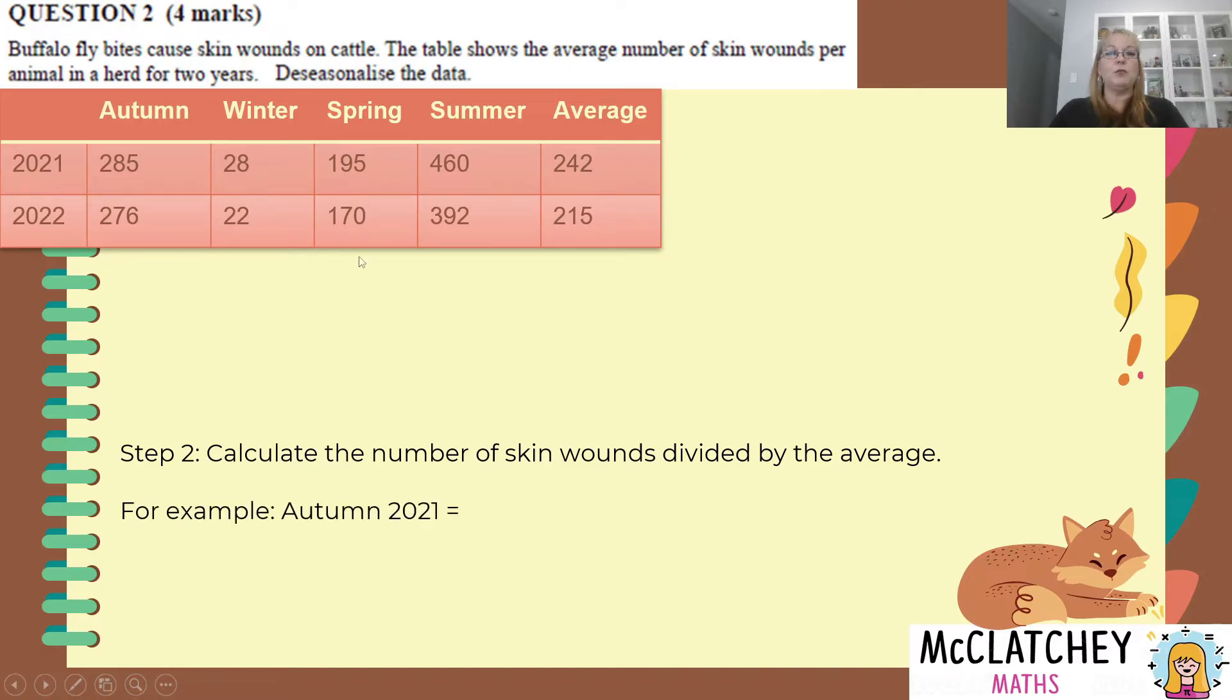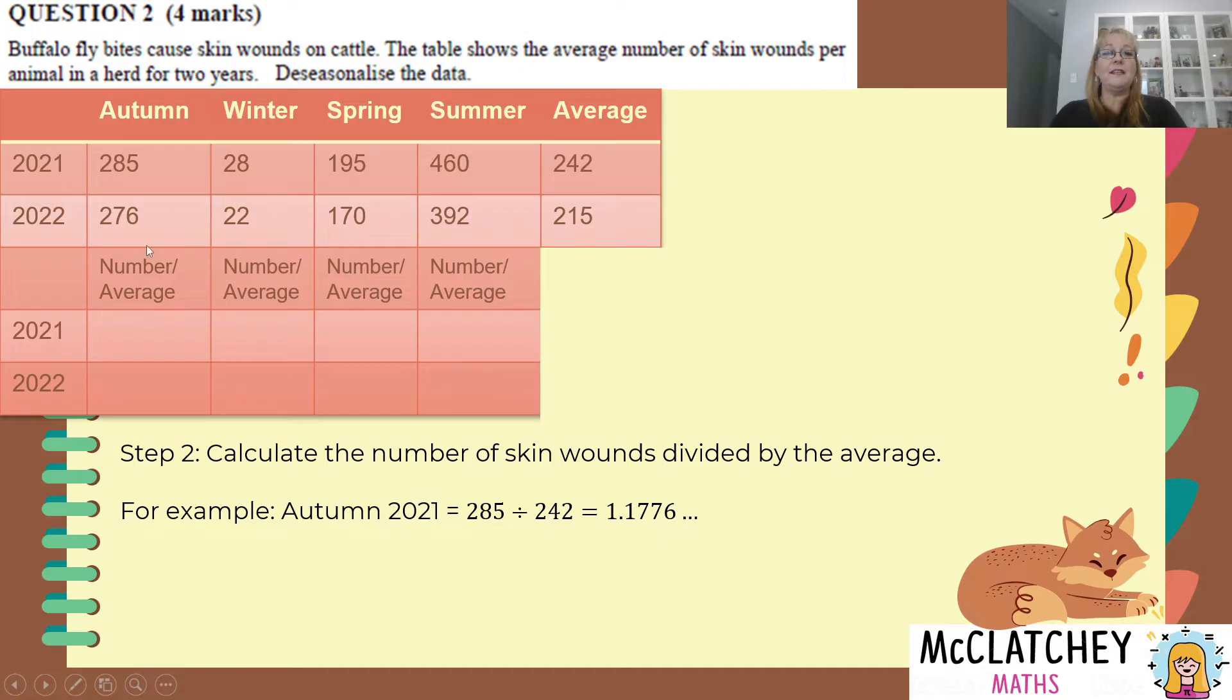So we'll start with autumn 2021 and this is where you would do your sample calculations. You take 285, divide it by 242 and the answer will be 1.176 and there's a lot more decimal places. You could probably round that up to four decimal places in your table. So we're going to insert now this little row here underneath each of these seasons, put two new years here and this number 1.1776 is going to pop into that table there.